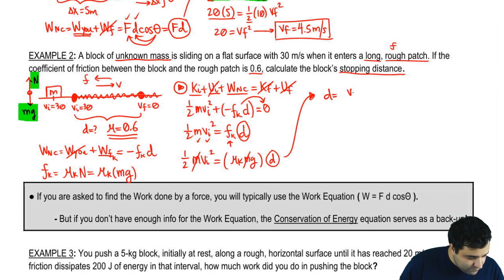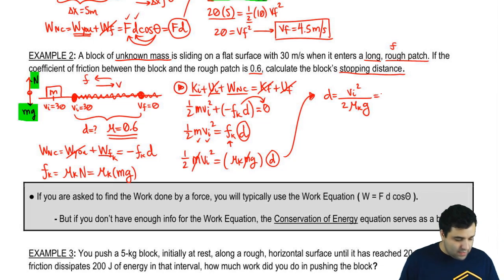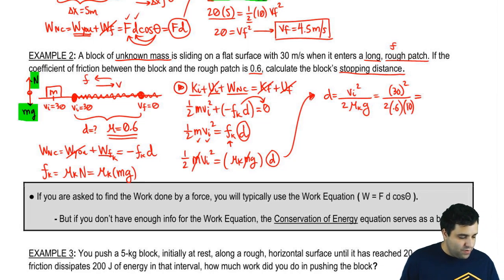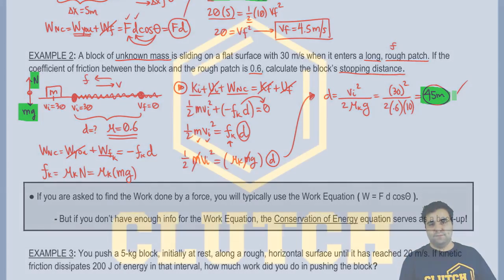Now we just have to solve for d. d will be v initial squared divided by 2, divided by mu k and g. The initial velocity is 30, friction coefficient is 0.6, gravity we're going to round to 10. And when you plug all of this into the calculator, you get 45 meters. That's it for this one. Thank you.